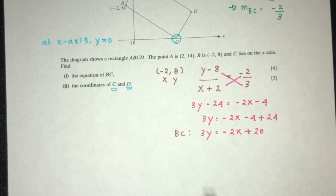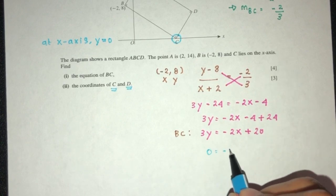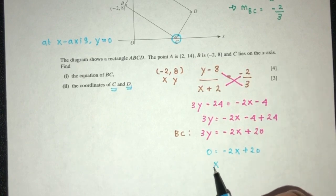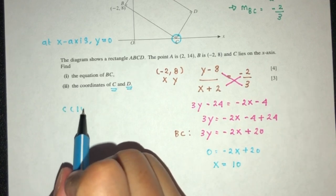Replacing in the equation of BC, you will have 0 here. 0 = -2x plus 20. x will be the value of 10. So the point C will be (10, 0).